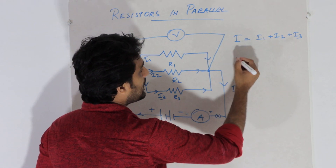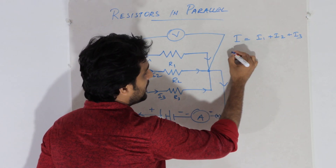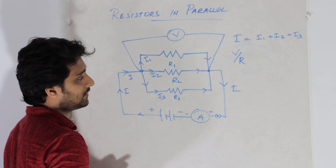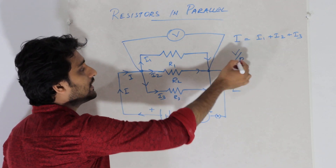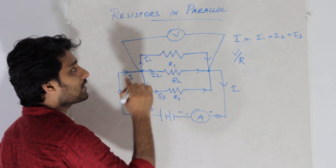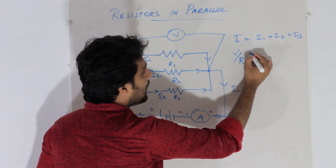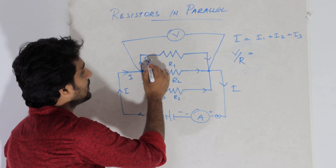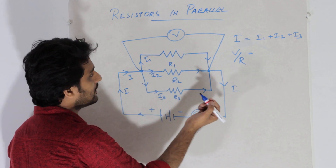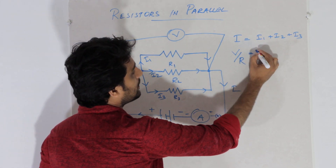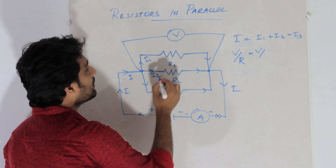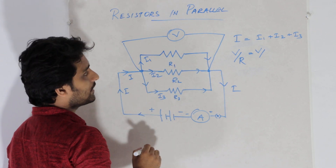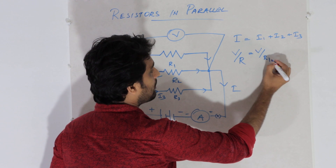Now, by Ohm's law, I is equal to V by R. So I1 is equal to V by R1, and the resistance is R1.